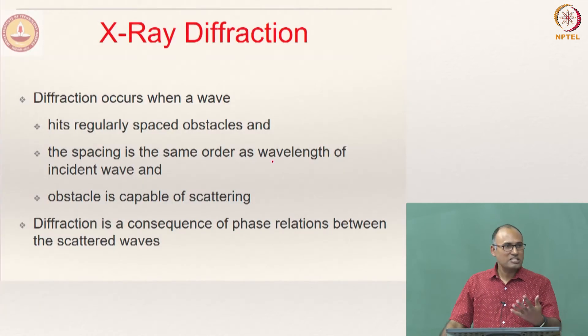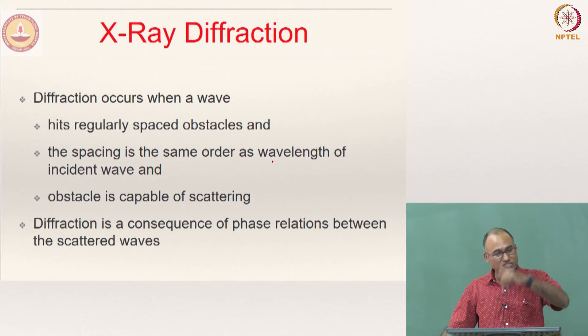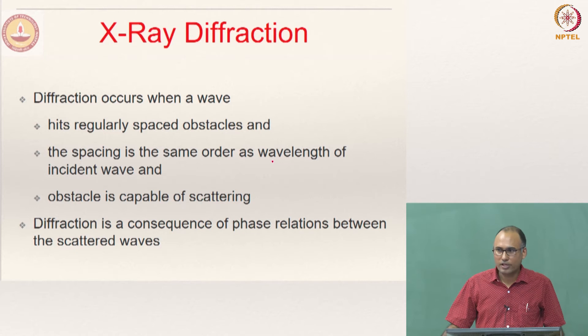We can use diffraction of light or X-ray diffraction. Diffraction occurs when the wave hits regularly spaced obstacles and if the spacing is the same order as the wavelength of the incident wave and the obstacle when the light is hitting, if the obstacle is capable of scattering the light, only then you will have interference.